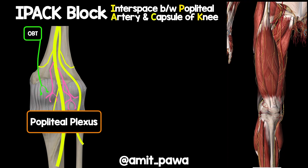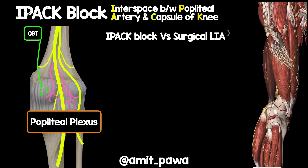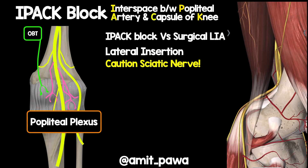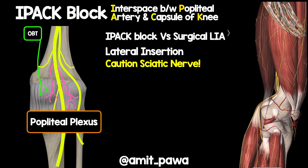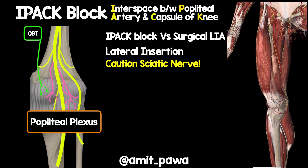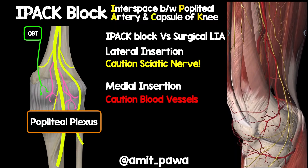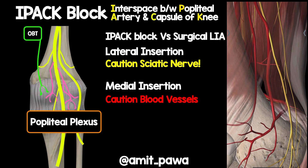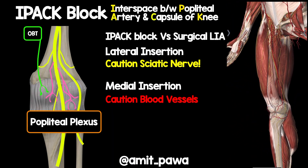There are a number of ways to address innervation of the posterior aspect of the knee. We can perform an IPAC block or surgical infiltration. With a lateral insertion, we need to be cautious of the sciatic nerve when aiming to find the space between the femur and the popliteal vessels. Approaching from the medial aspect, we must be careful of blood vessels including the long saphenous vein.